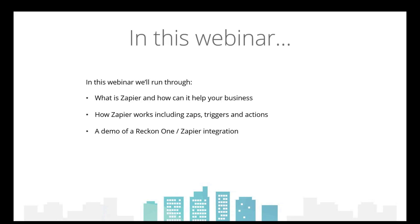Today in this webinar we'll run through what Zapier is and how it can help your business. Many of you may not have heard of Zapier before, or you've heard of it and aren't sure exactly what it does, so we'll go through the high-level concepts. We actually use Zapier in our own business at Reckon — we push things like online API registrations through to our CRM, and we give ourselves notifications through our communication channel when new applications come through. Finally, we'll finish off with a demonstration of Reckon One and Zapier, with some use cases.